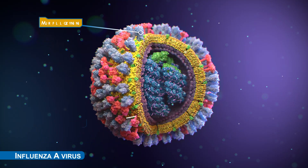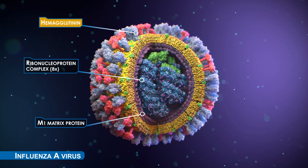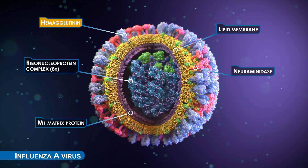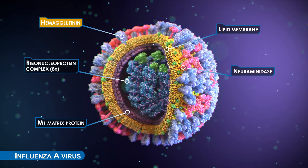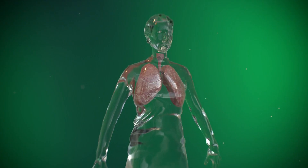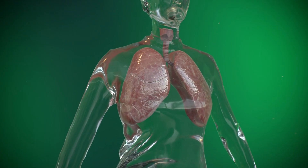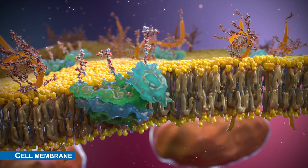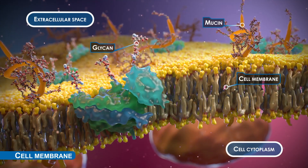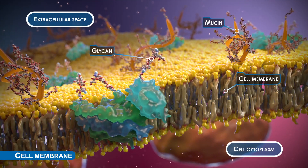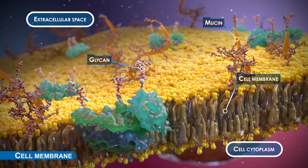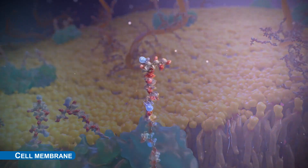To assess the zoonotic potential of new influenza variants, we need to understand how viruses find their host cells. The target cells of the influenza virus are covered with glycans that have all kinds of functions, and may act as receptors for influenza or as decoys.